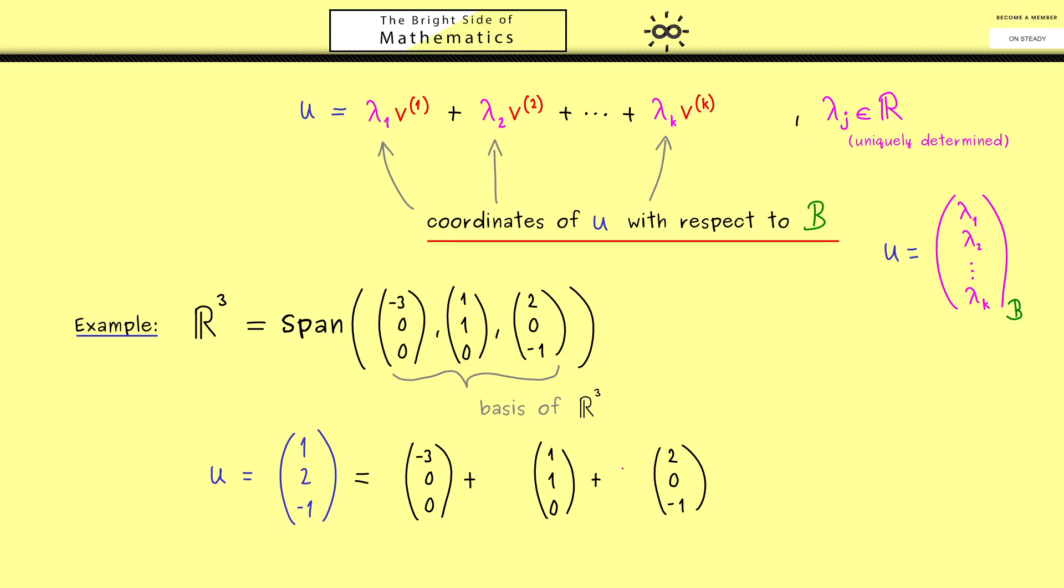We immediately get the correct linear combination if we start here at the bottom with the third coordinate. Because in order to get the -1 there we need the third vector here once. And then in order to get the two here we need the second vector twice. And then we just have to combine these two vectors here to see that we need the first vector once. So in other words you see this system of linear equations was easily solvable. Hence we get the coordinates of u with respect to this new basis are 1, 2, 1. So in this case almost the same as the coordinates with respect to the standard basis.